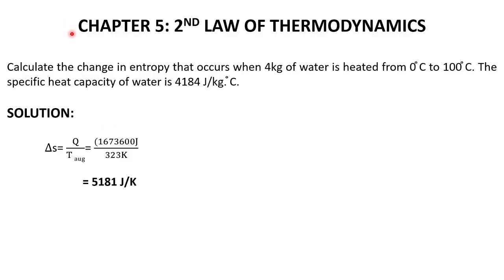Hello everyone, today we're going to solve the second problem from Chapter 5, Second Law of Thermodynamics. Calculate the change in entropy that occurs when 4 kg of water is heated from 0°C to 100°C. The specific heat capacity of water is 4184 J/kg·°C.